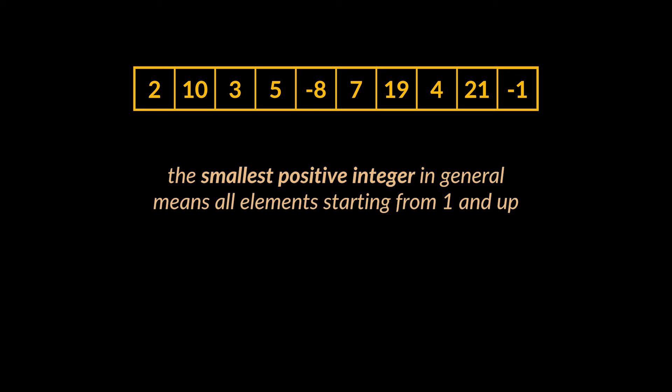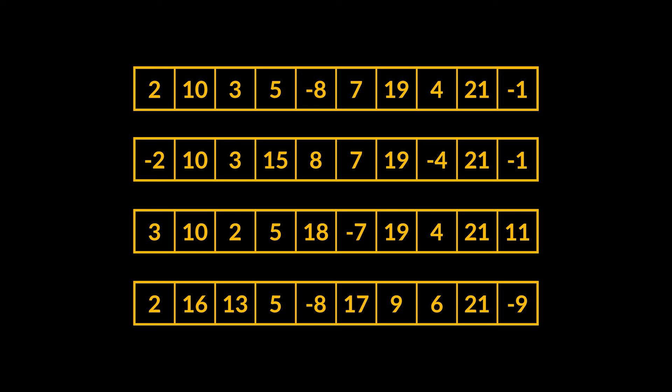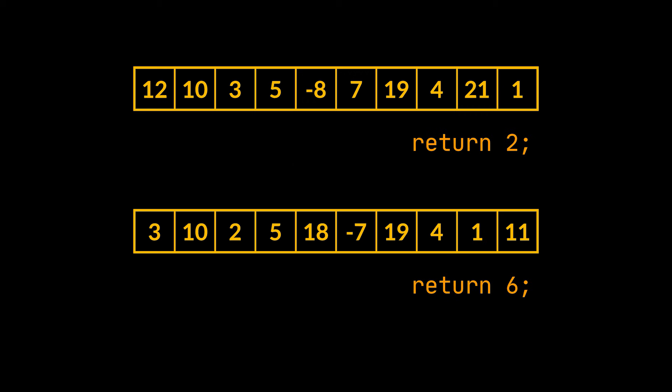But the smallest positive integer in general means all elements starting from 1 and up. So you might be asking, if the array does not contain the integer of value 1, then is 1 the answer? Yes, that is correct. Therefore, all the arrays you see have 1 as their solutions. And these two arrays will have 2 and 6 respectively as their solutions.